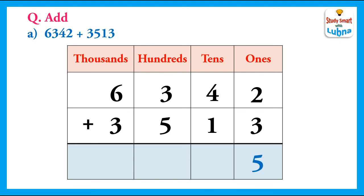After this, we will add the tens. 4 plus 1 equal to 5. We write 5 in the tens column. Now, we will add the hundreds. 3 plus 5 equal to 8. We write 8 in the hundreds column. After this, we will add the thousands. 6 plus 3 equal to 9. We write 9 in the thousands column.